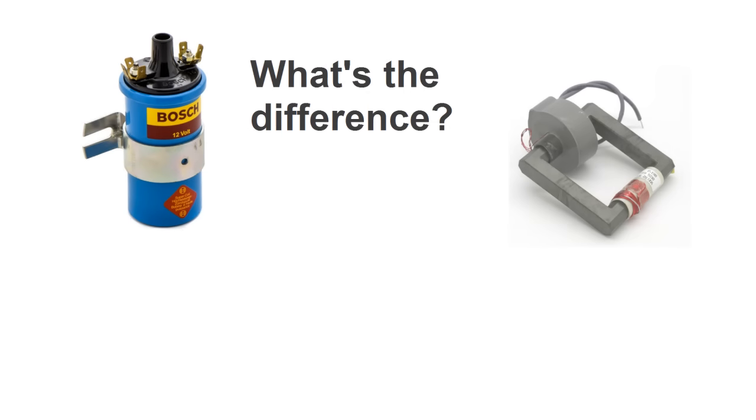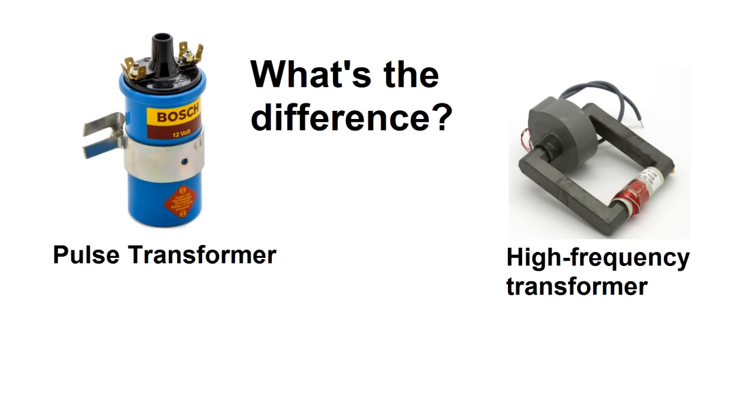Now you may be wondering, what's the difference between this and any other transformer? After all, this isn't the first time I've used transformers to produce high voltage. The fundamental difference between the ignition coil and other transformers is that it's a pulse transformer. It isn't designed to operate with a continuous alternating current like a flyback transformer or a microwave transformer.